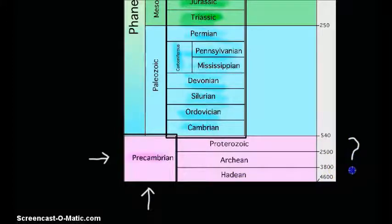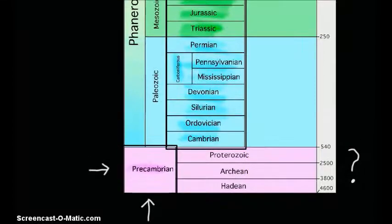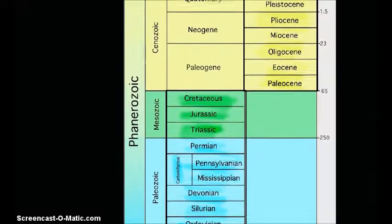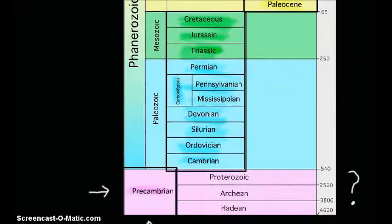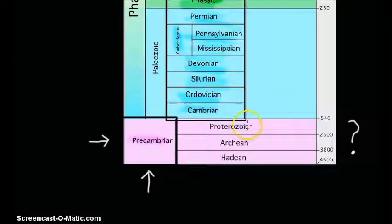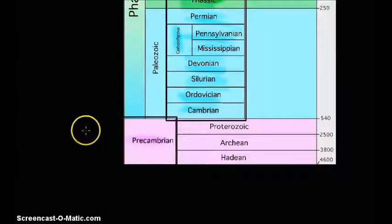The reason we lump them together is that very little is known about these three parts of time. The Proterozoic, Archean, and Hadean don't have a significant fossil record compared to other parts of the geologic timescale. So these three eons are lumped together under the single term 'Precambrian.'